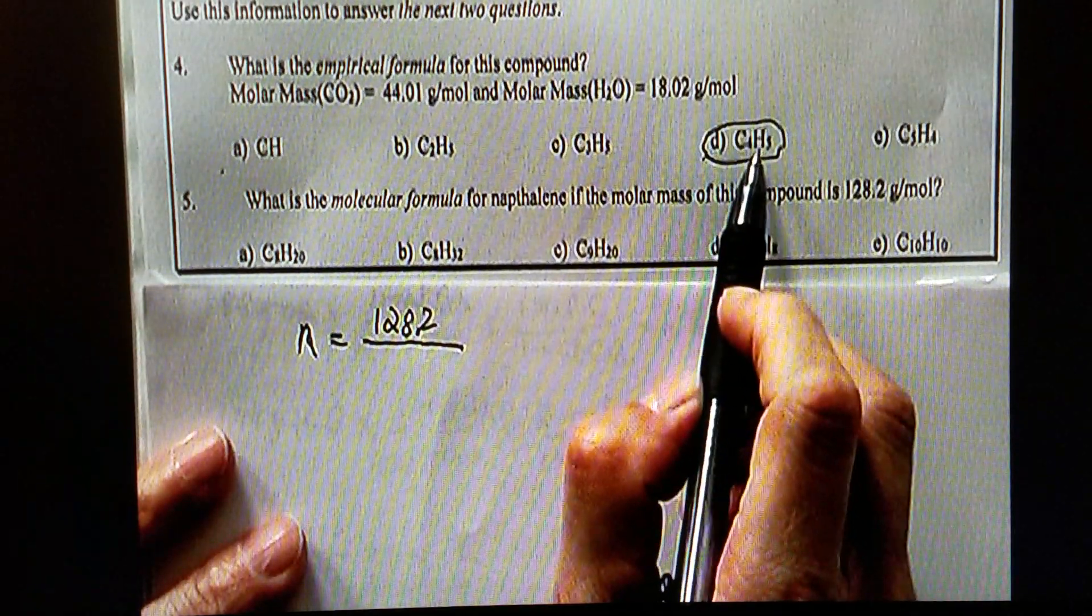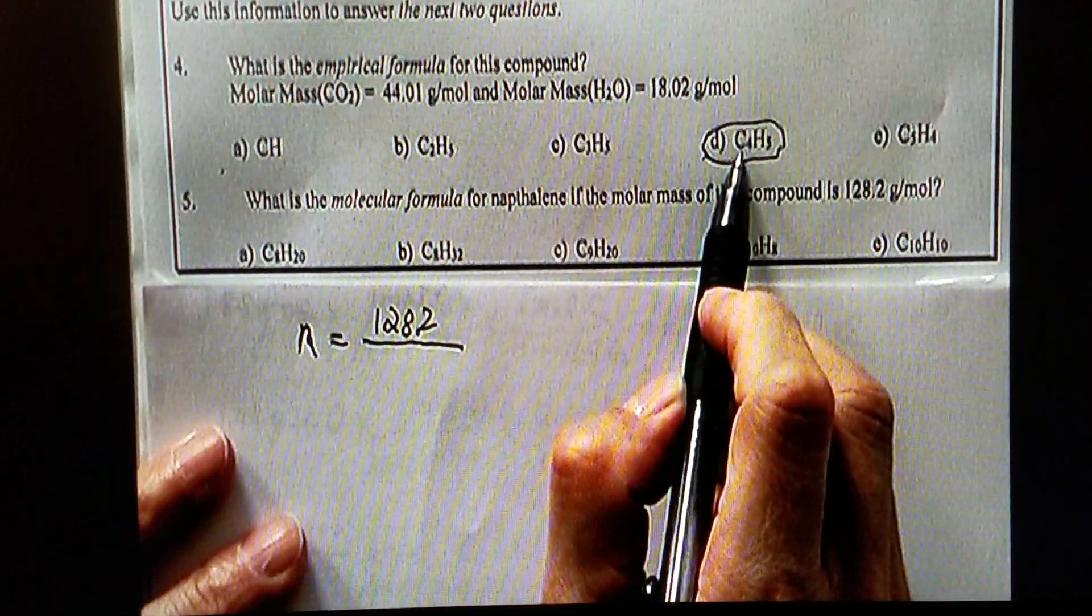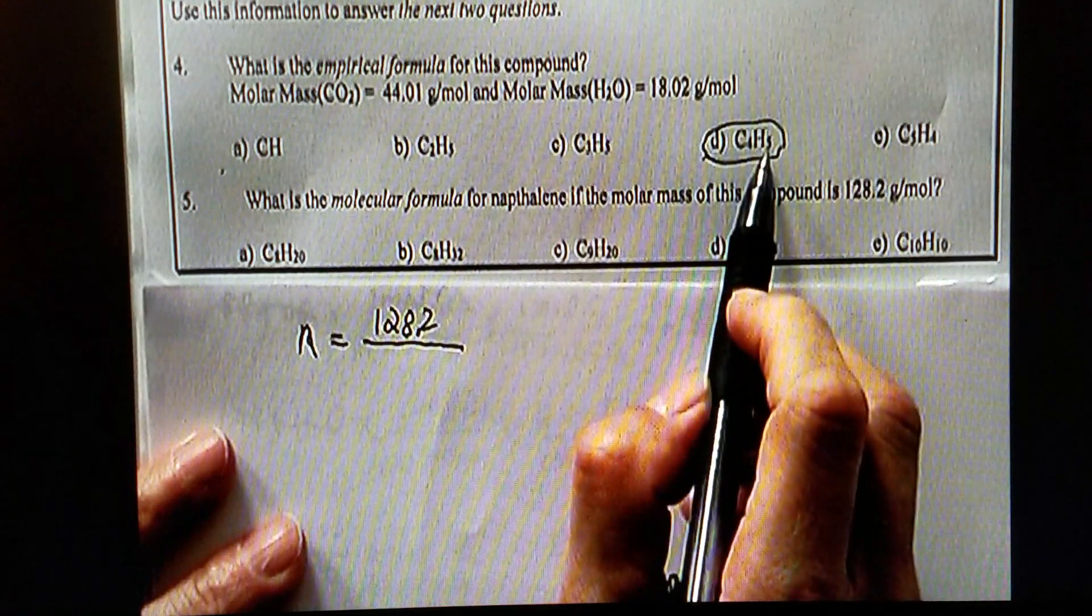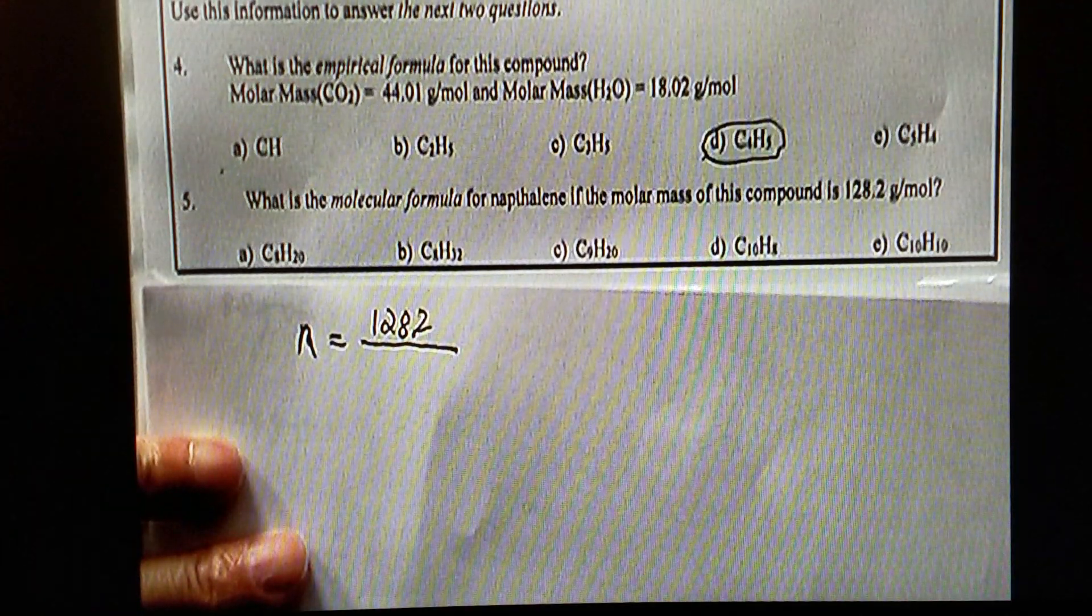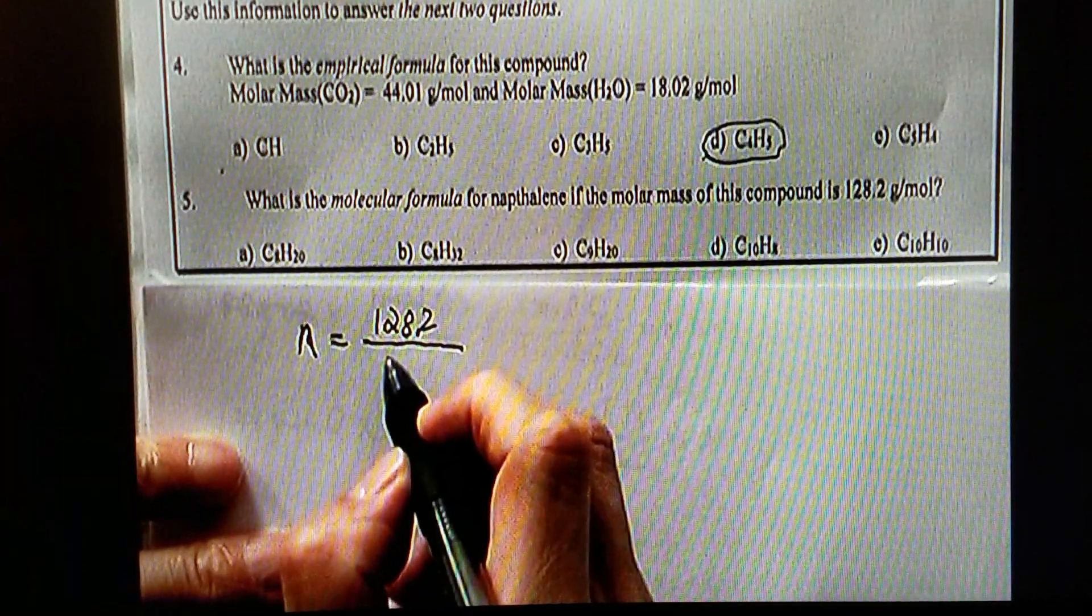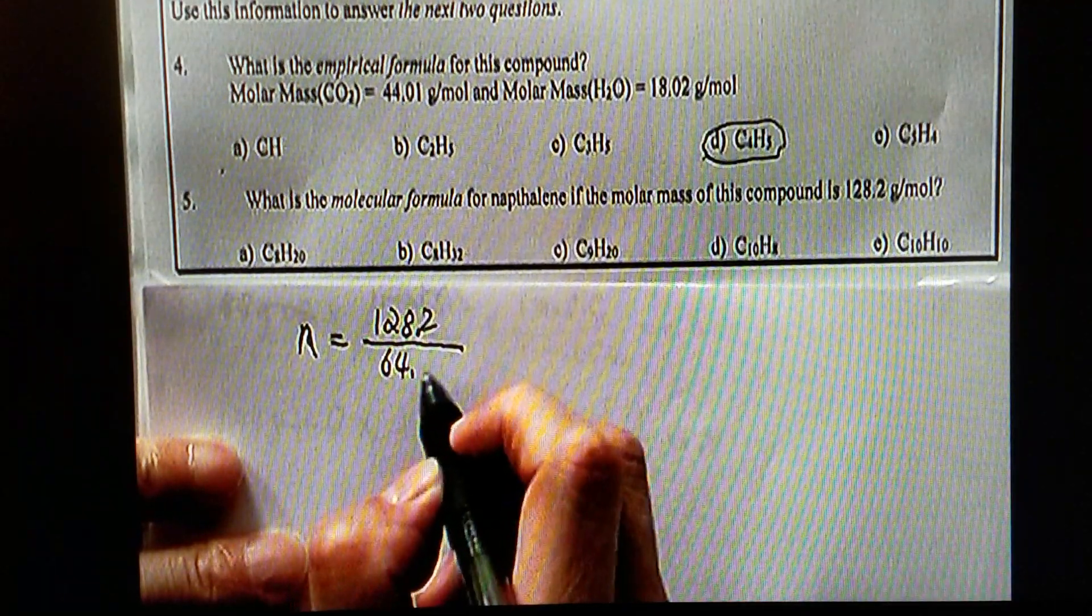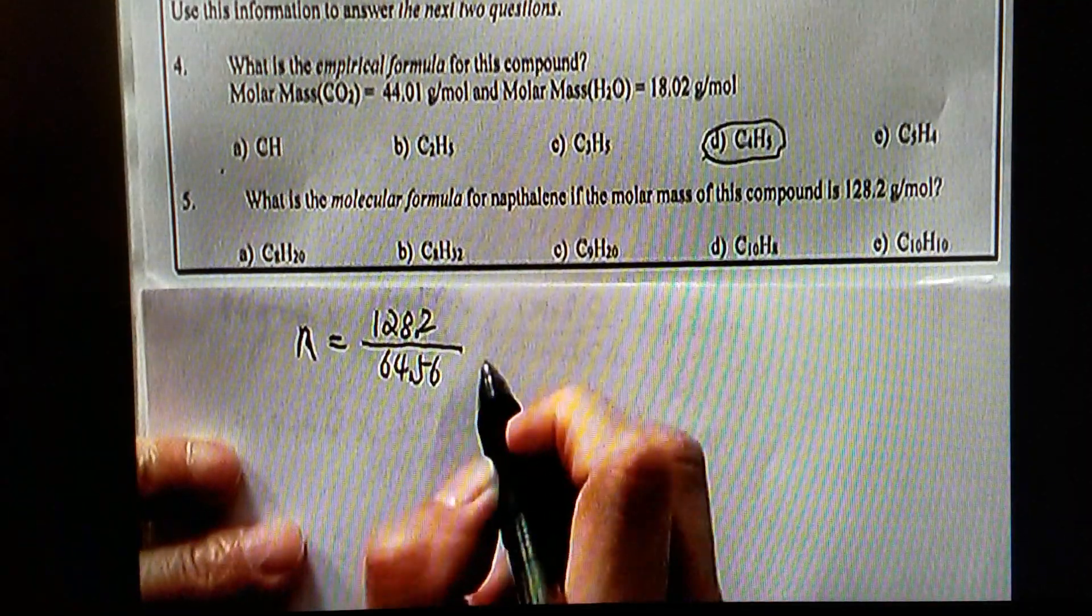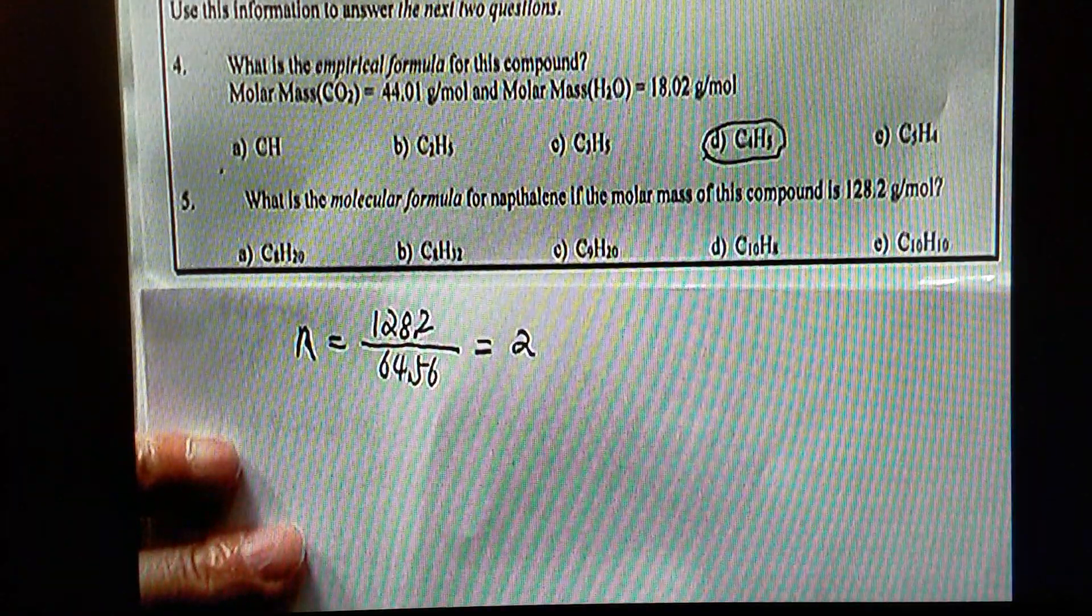n can be calculated by using the molar mass of the molecular formula, which is 128.2, divided by the molar mass of the empirical formula. So, C5H4. And if you use periodic table, each carbon is 12. 5 times 12, that's 60, and then plus 4 hydrogen. Each hydrogen should be just 1. I would say this is about 64. And now, I should give you n about 2.